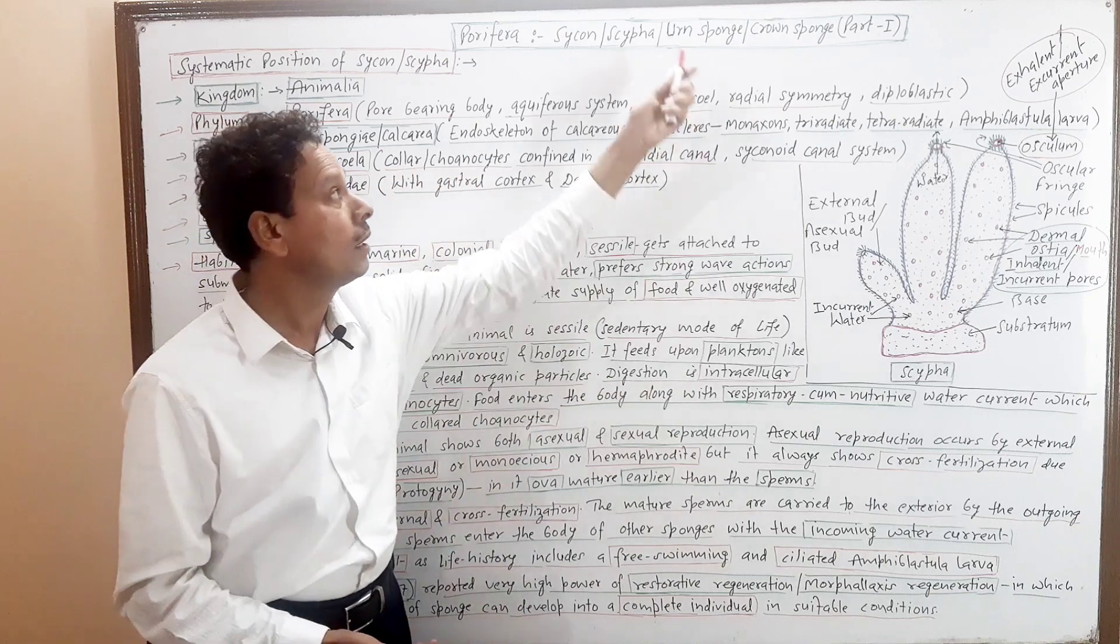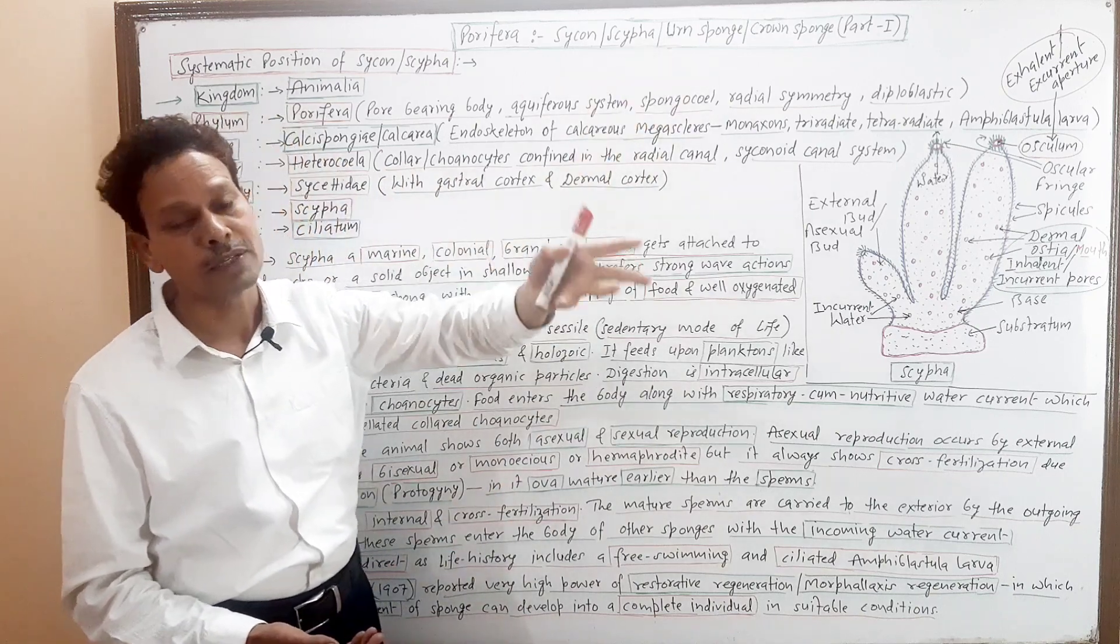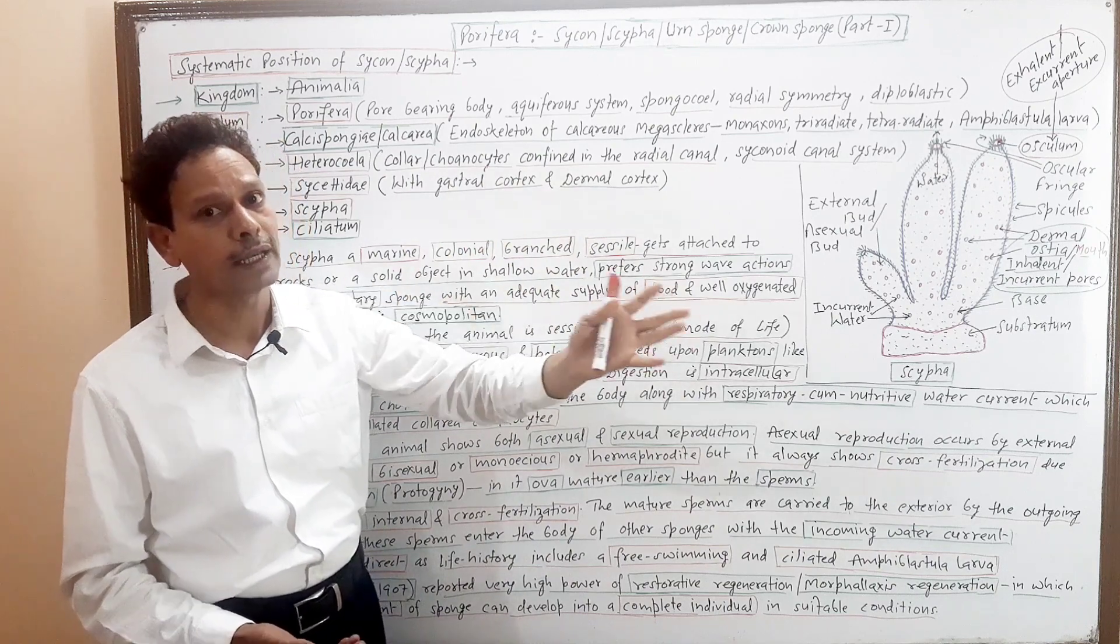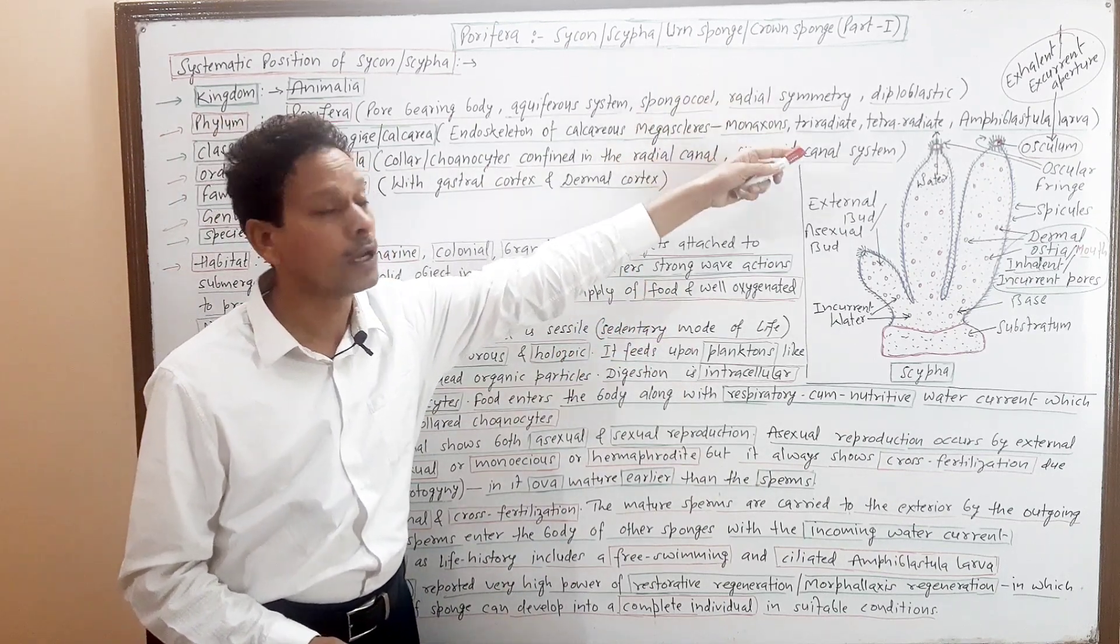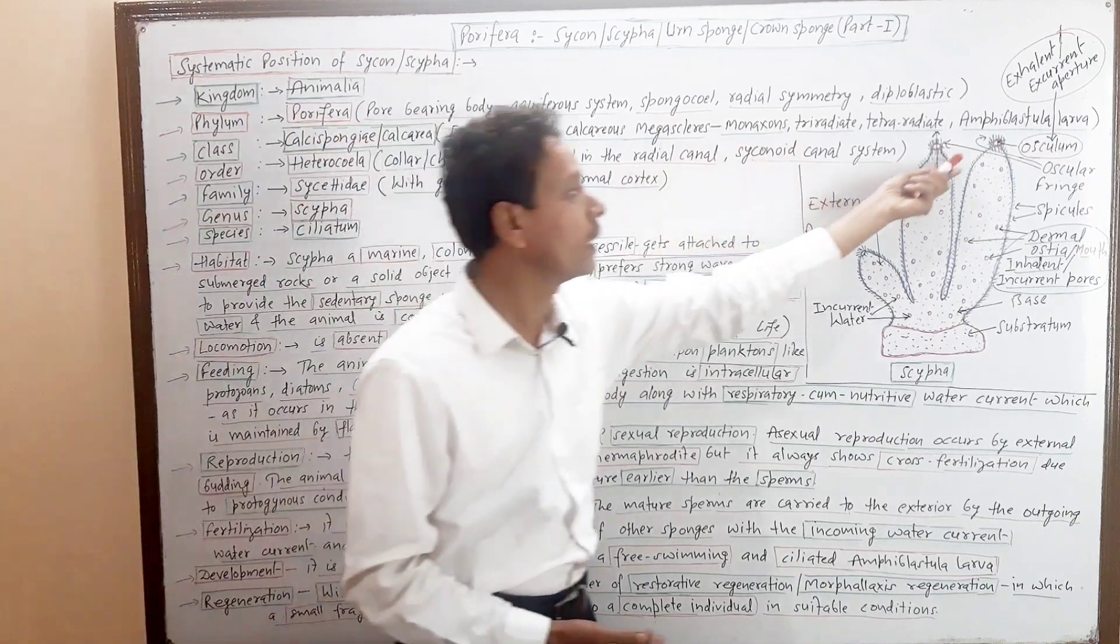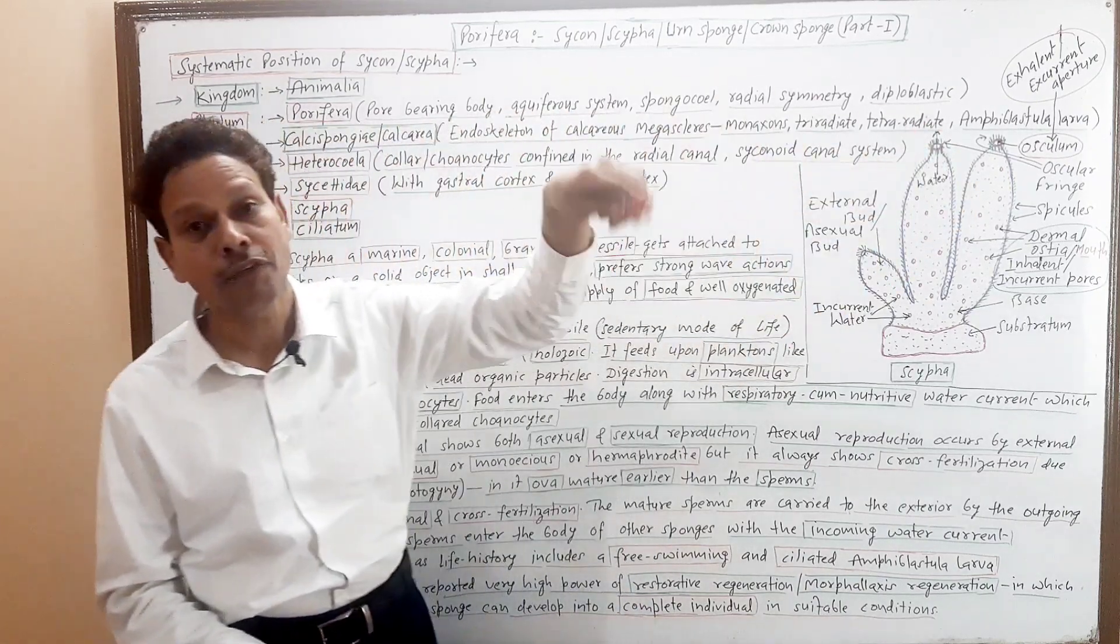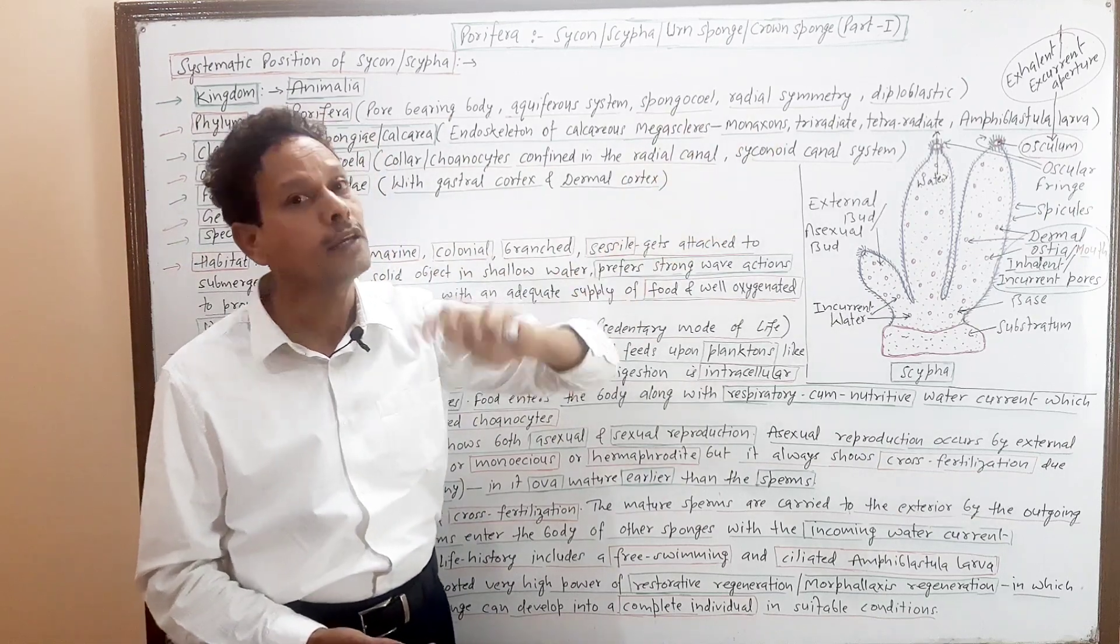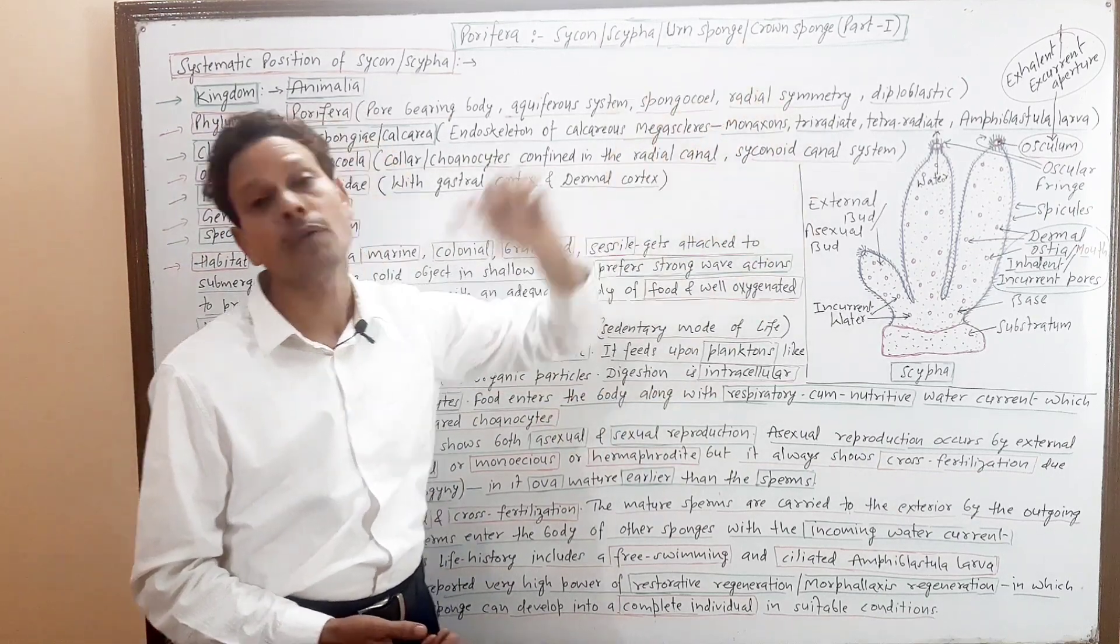Common names: urn sponge because its shape is vase-like, urn-like, and crown sponge. Look at the osculum - the spicules form a fringe making a crown, a ring. That's why it is crown sponge.